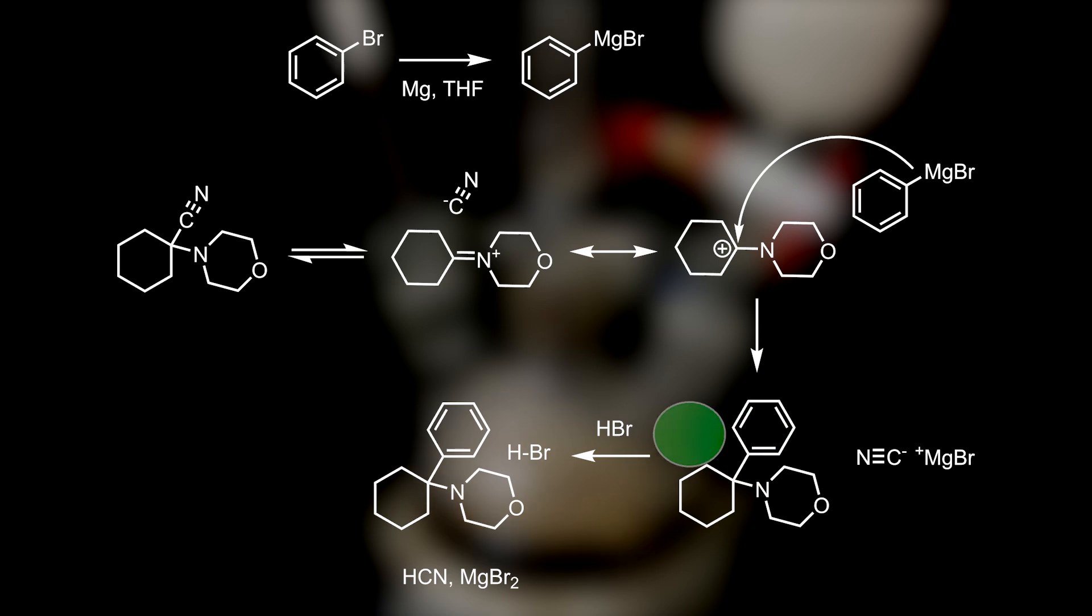Afterward, it is treated with aqueous hydrobromic acid, converting the PCMO into its hydrobromide salt, and reacting with the cyanide to give hydrogen cyanide, which largely bubbles out, and the salt magnesium bromide. Any remaining magnesium metal will also react for magnesium bromide and hydrogen.